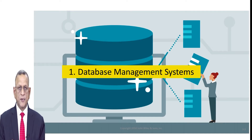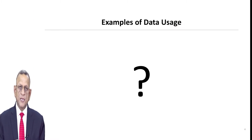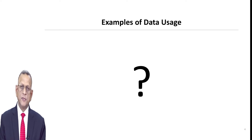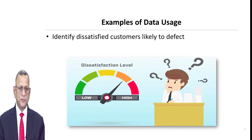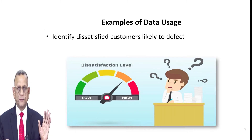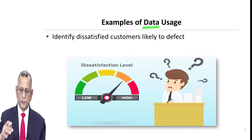The first section is database management systems. Before talking about DBMS, let us understand the usage of data — how data is being used in real business scenarios. The first example is identifying dissatisfied customers likely to defect: you want to know the customer who used to buy from you earlier but is no longer buying, and it seems that customer will leave you. Data will be in a position to help you with that.